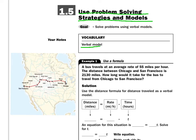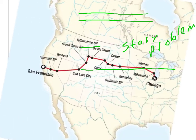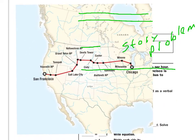Here we go. We've got a bus travels at an average of 55 miles per hour, the distance between Chicago and San Francisco. Those of you who don't know where Chicago or San Francisco are, here you go. Here's your map.